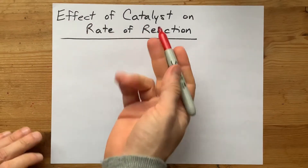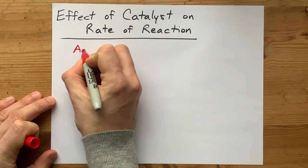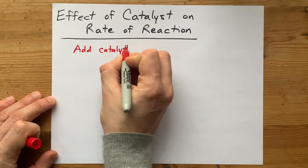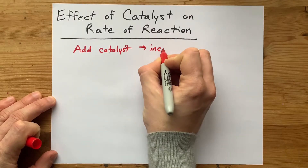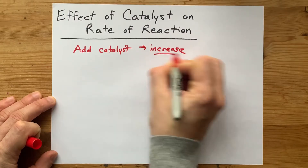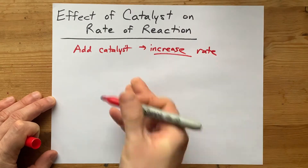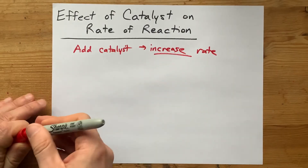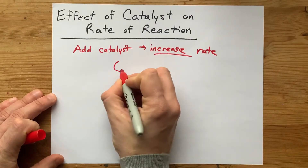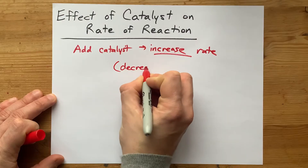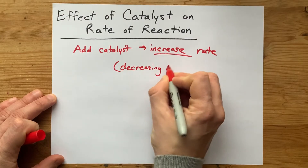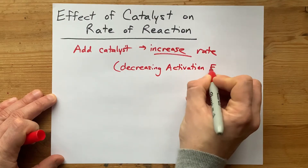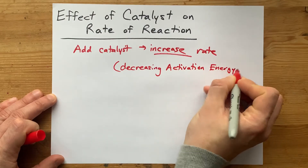What is the effect of a catalyst on the rate of a reaction? The effect is that when you add a catalyst, you are increasing the rate of reaction — speeding up the reaction and getting to the same products faster. The way that happens is that you are decreasing the activation energy required, and you're doing that by providing a new pathway entirely.